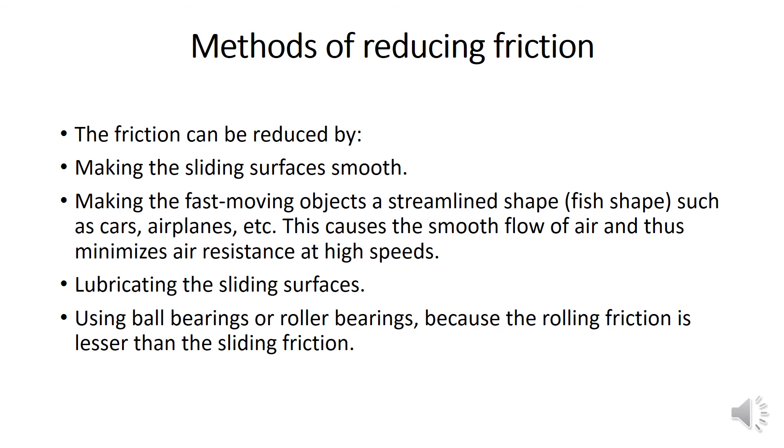Now, how do we reduce these friction? Friction can be reduced by lubricating the sliding surface, using ball bearings or roller bearings because the rolling friction is lesser than the static friction. So, making a fast moving object a streamlined shape is also an example.